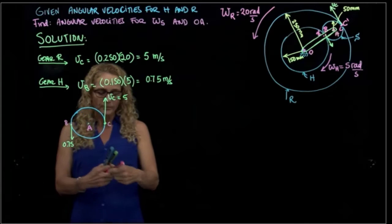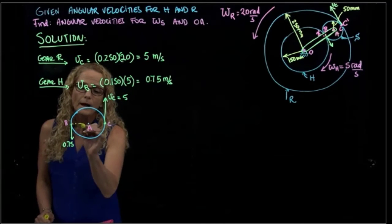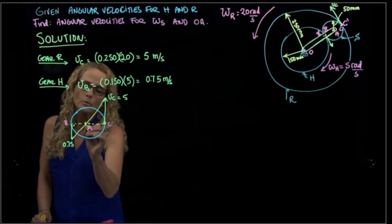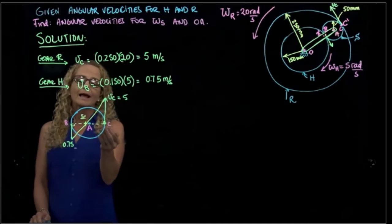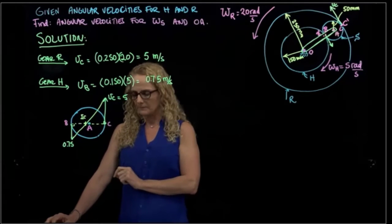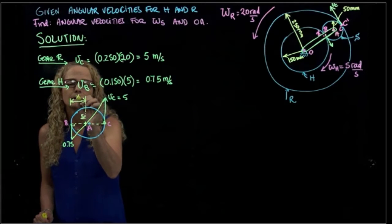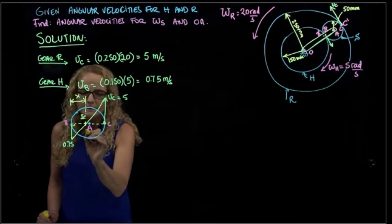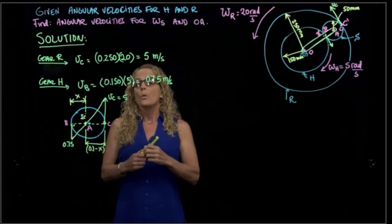Connecting those two velocity vectors, the instantaneous center of rotation of that gear will not be at A — it will be a point along this line, since both velocities are perpendicular to it. Connecting those two lines, the instantaneous center of rotation is somewhere near B, different from point A. Since we don't know exactly where it is, I'll call this distance x. The gear diameter is 50 mm, so the full distance is 100 mm, meaning the remaining distance is 0.1 minus x.